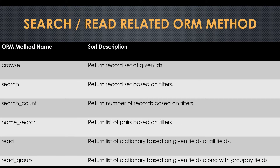In this screen we have searching-related methods. The first method is the browse method — this method will return a record set based on given IDs. The search method is commonly used while fetching record sets based on conditions. The search_count method will help to get the number of records based on conditions and the return type is integer.